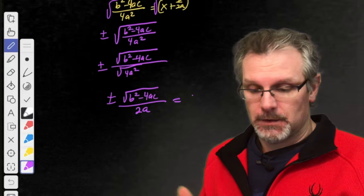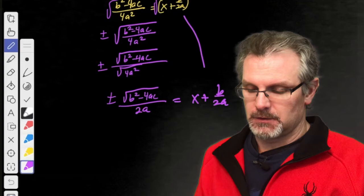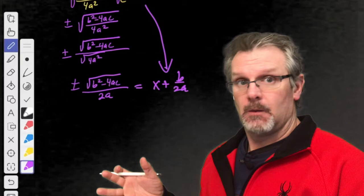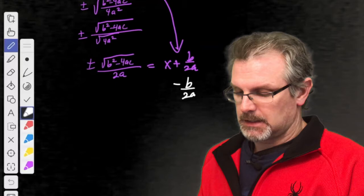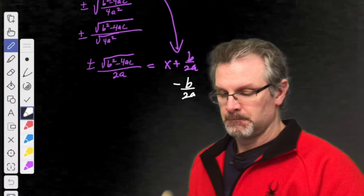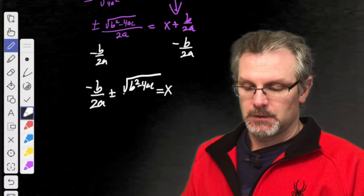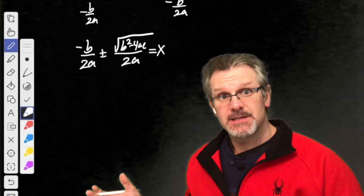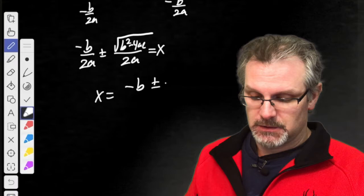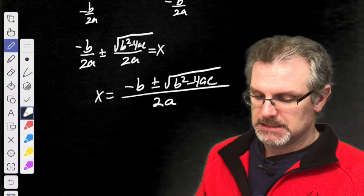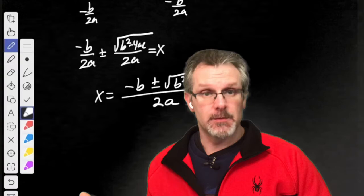That equals x plus b over 2a. I want x by itself, so I subtract b over 2a from both sides. This gives x equals the opposite of b over 2a, plus or minus the square root of b squared minus 4ac all over 2a. Because we have common denominators, we can combine: x equals the opposite of b plus or minus the square root of b squared minus 4ac, all over 2a. And that's our quadratic formula — x isolated.